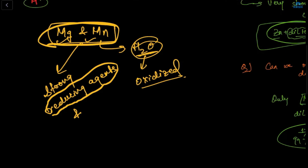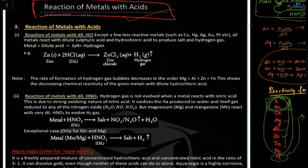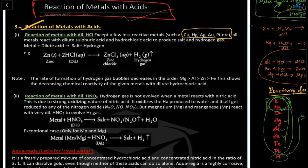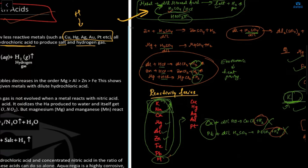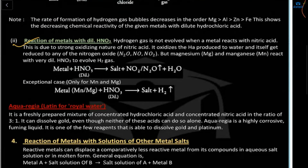From the notes: reaction of metals with acid — except a few less reactive metals below hydrogen, all metals react with dilute H₂SO₄ and HCl to produce salt and hydrogen gas. Metal plus dilute acid gives salt plus H₂. If reacting with HNO₃, hydrogen gas is not evolved.